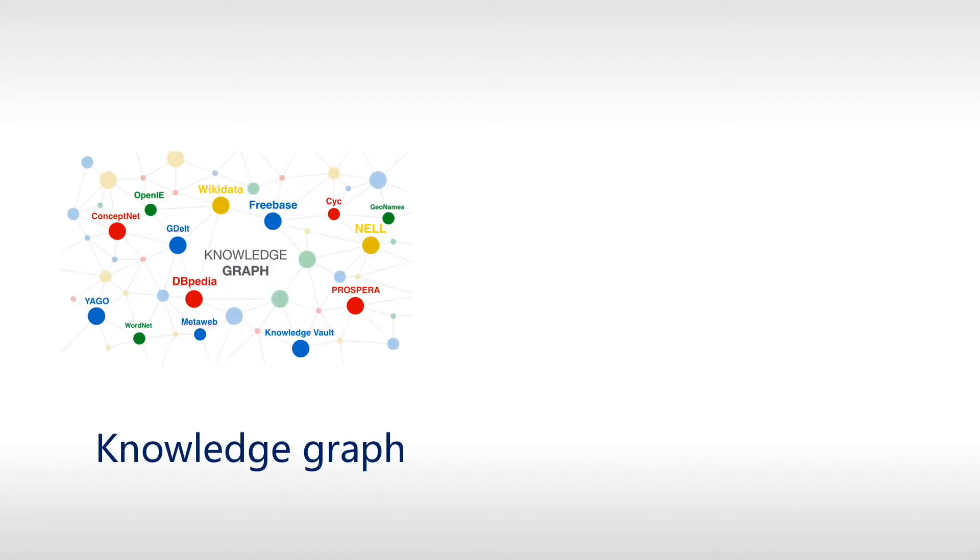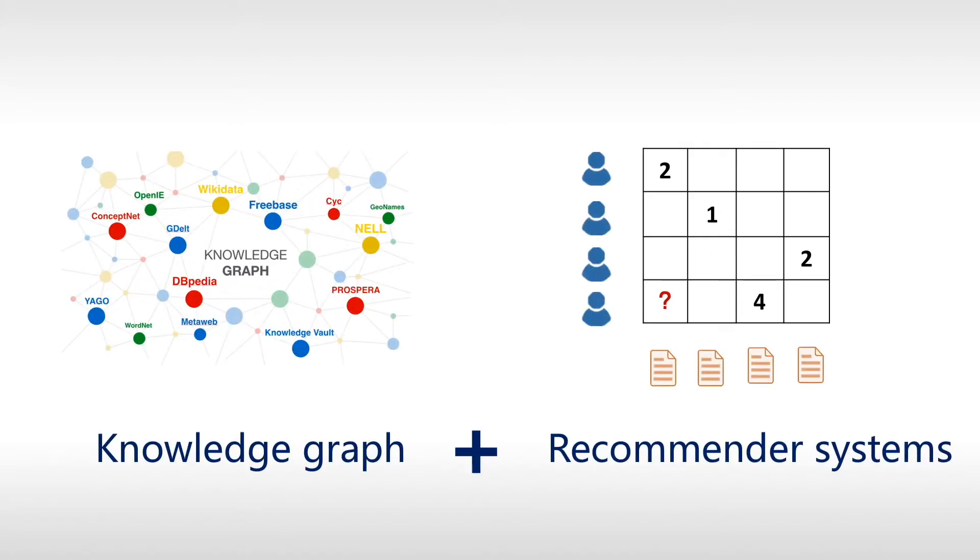Our work aims to use knowledge graphs to assist recommender systems. The core challenge in utilizing knowledge graphs to improve recommender systems is in learning how to express item relationships about the knowledge graph.